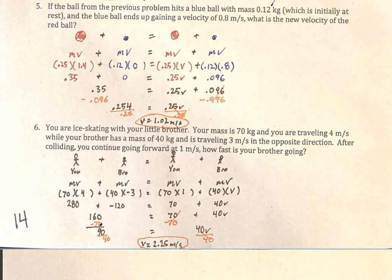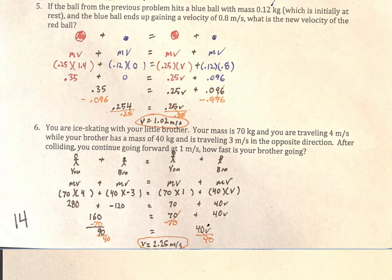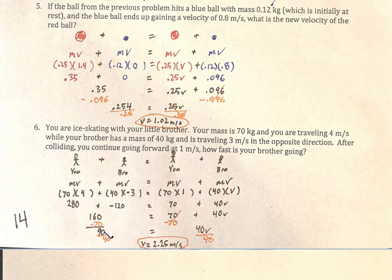From 160 = 70 + 40V, subtract 70 from both sides to get 90 = 40V. Then divide both sides by 40, and we're left with 90 ÷ 40 = 2.25 meters per second. That's the same as 9 ÷ 4, which equals 4.5 ÷ 2 = 2.25.